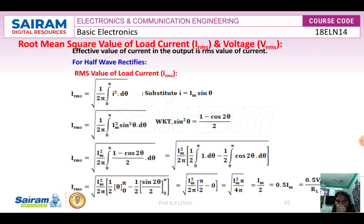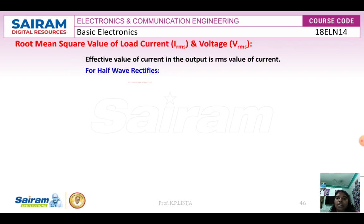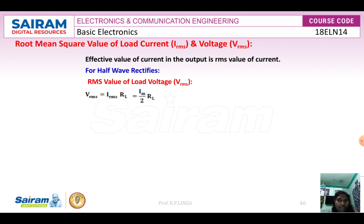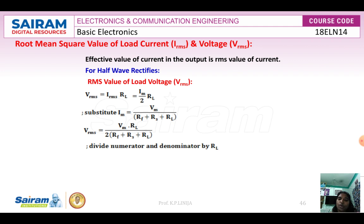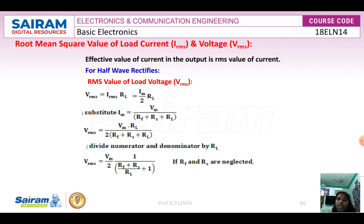For the half wave rectifier load voltage, VRMS equals IRMS × RL. We know IRMS equals Im/2, and Im equals Vm/(RF + RL). Dividing numerator and denominator by RL, and neglecting RF and RS since their values are very small, we finally get VRMS equals Vm/2.